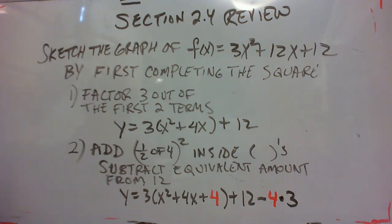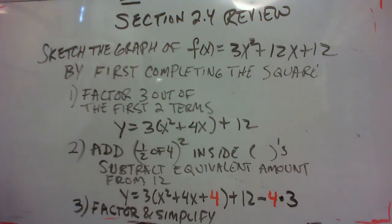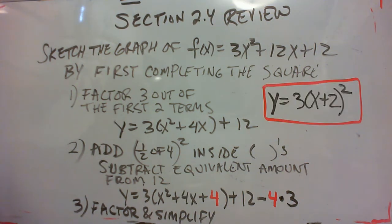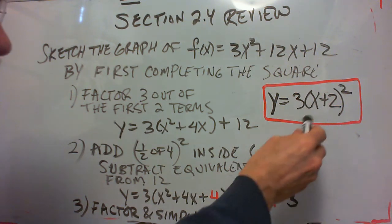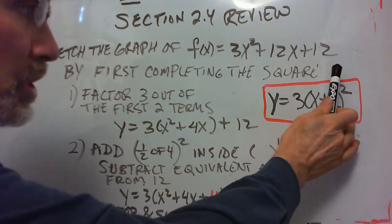So now your next step is just simplify and factor, or factor and simplify. So factor that trinomial, and then simplify the 12 minus 12 to get your final form. So try this on your own. So when you factor the trinomial, it factors as x plus 2 times x plus 2, which is x plus 2 squared, the 12 minus 12 turns to 0. So our standard form is 3 times the quantity x plus 2 squared.